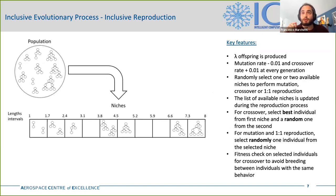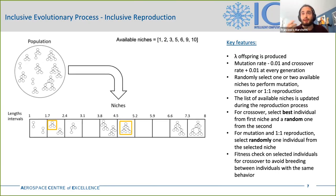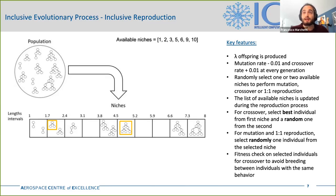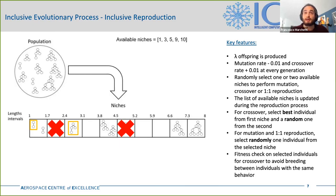Coming to the inclusive reproduction, considering the previous example, the reproduction process starts by selecting the reproduction operation to perform according to the assigned probability. In this case it starts with crossover, represented by the yellow boxes, and selects two niches from the list of available niches shown on top. Considering these two niches, the best individual is chosen from the first one and a random individual from the second one, and then these individuals are combined with a one-point crossover operator. The process then continues, crossover is selected again, two niches are selected, and crossover is performed.